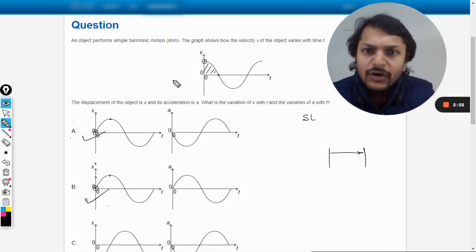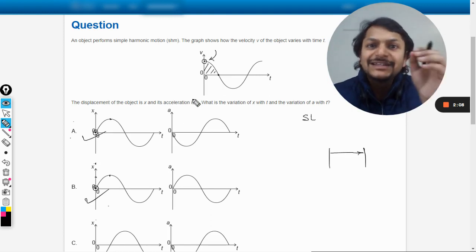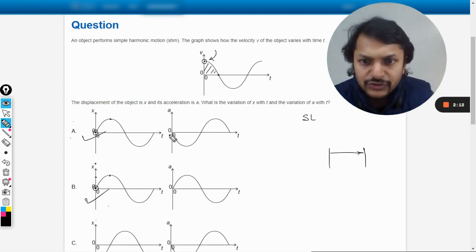So let us now go to the acceleration graph. How are we going to do this? In the acceleration time graph, you see at the mean position when the velocity is maximum, acceleration is zero. So initially acceleration should be zero.